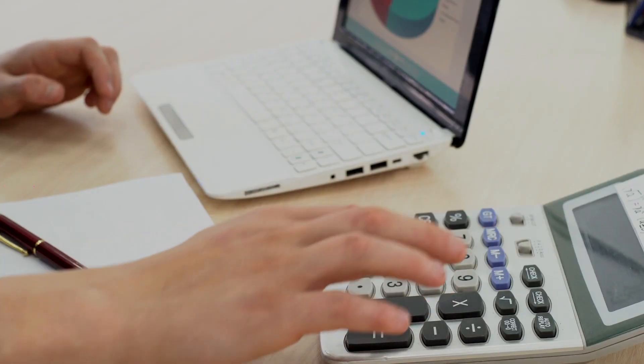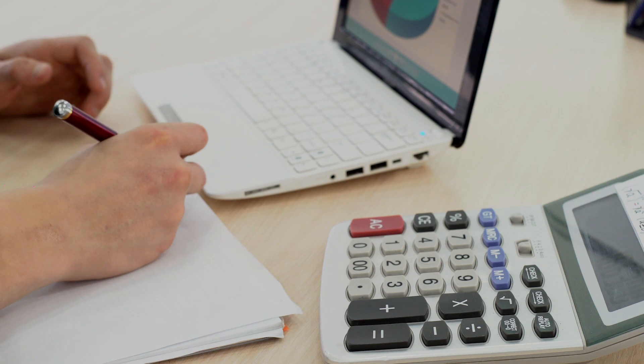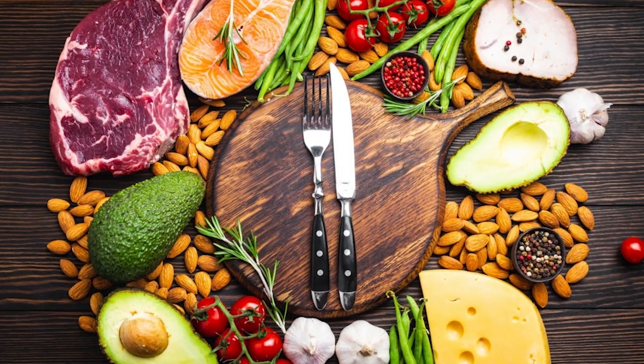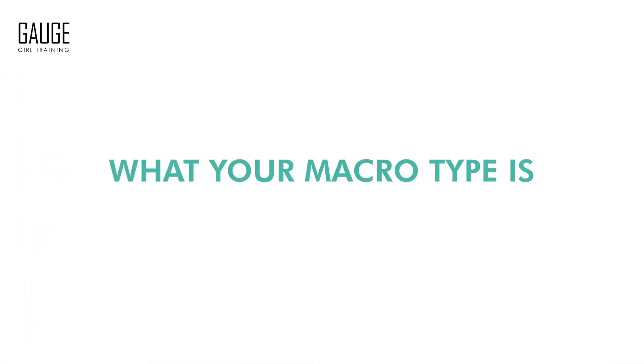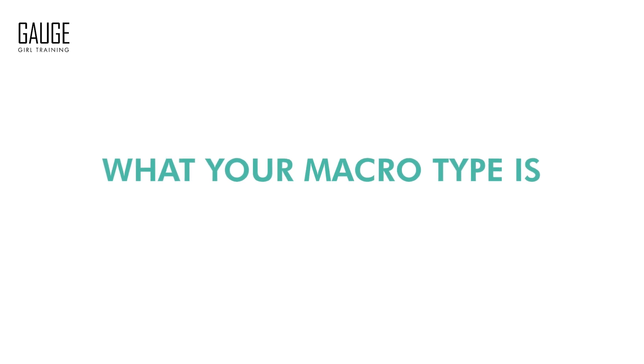I would like you to comment in the comment section what your waist to hip ratio is, because based off of this value, it is greatly going to impact how your body processes dietary fats as well as dietary carbohydrates. This is an important factor when figuring out what your macro type is, which I talk about in depth in my upcoming book, Unlock Your Macro Type.